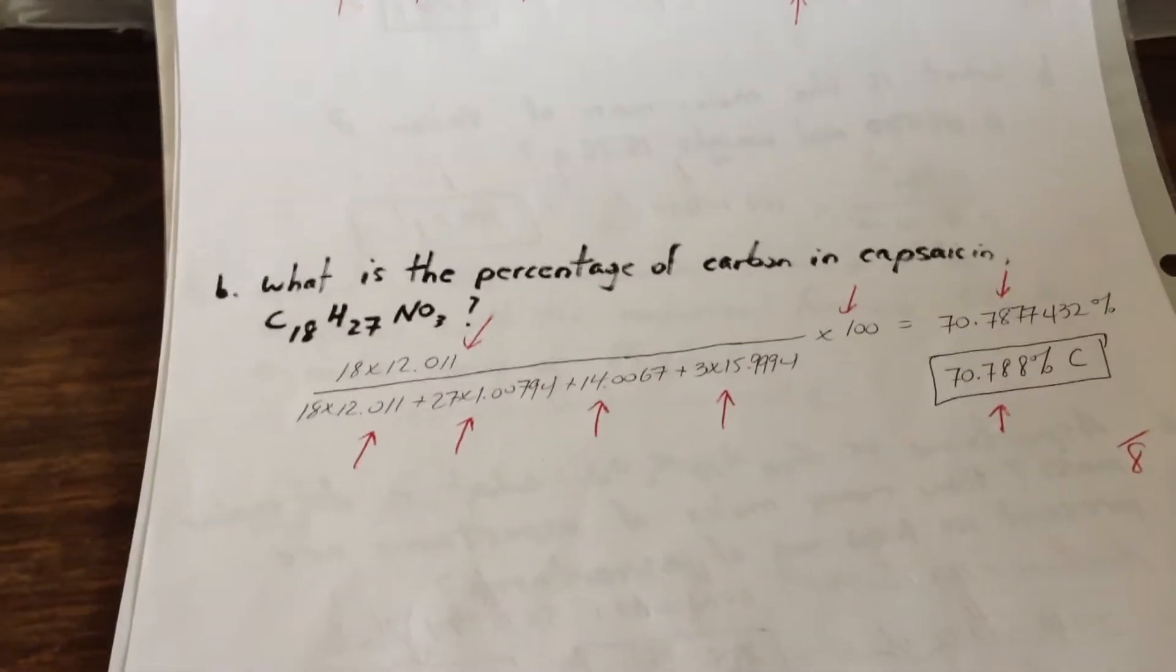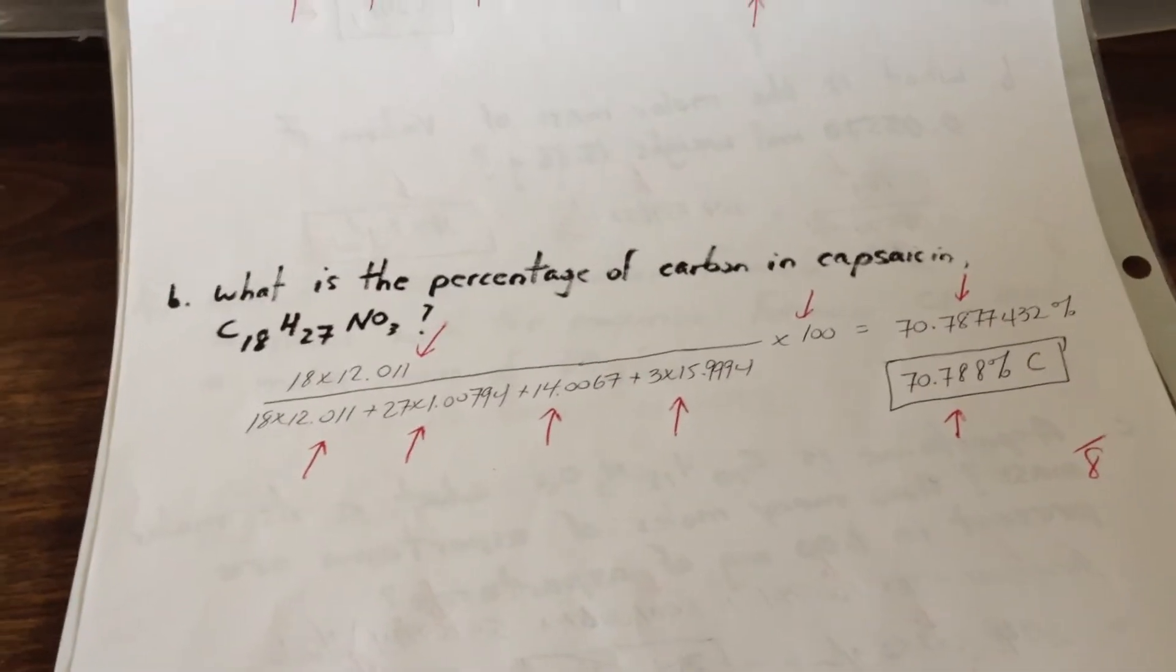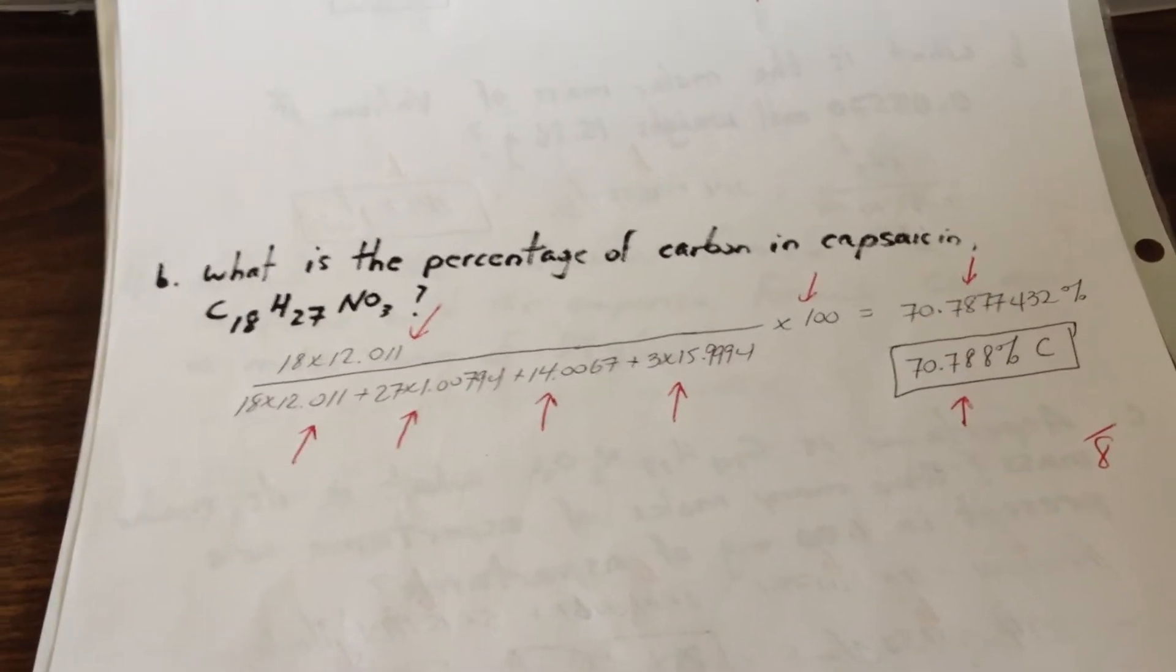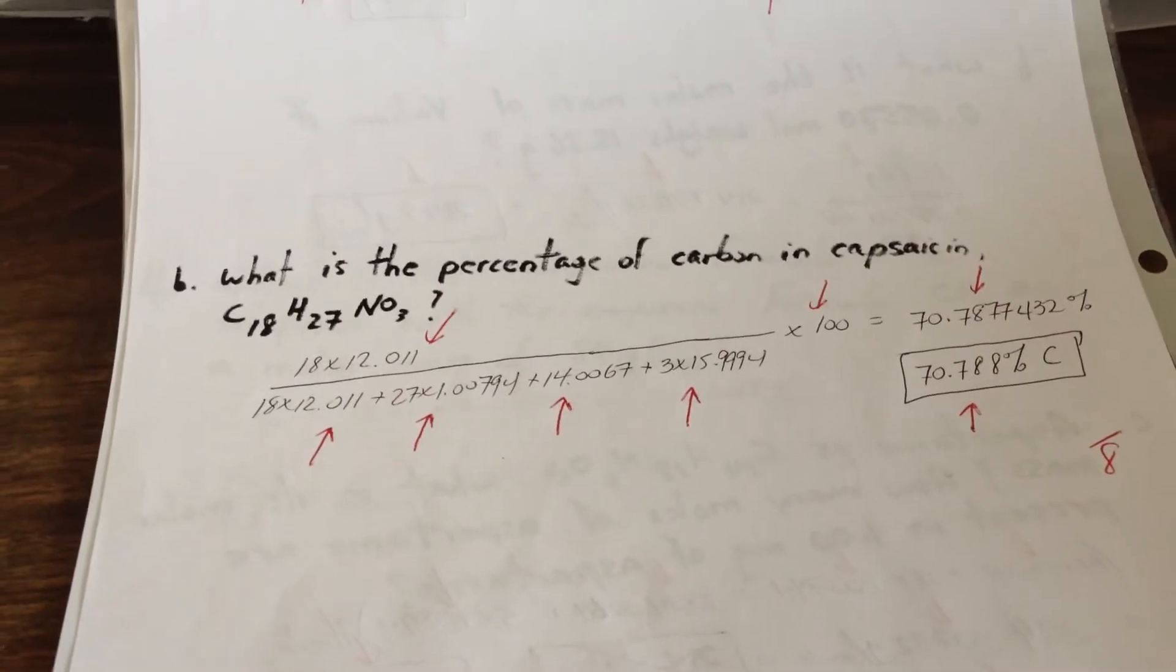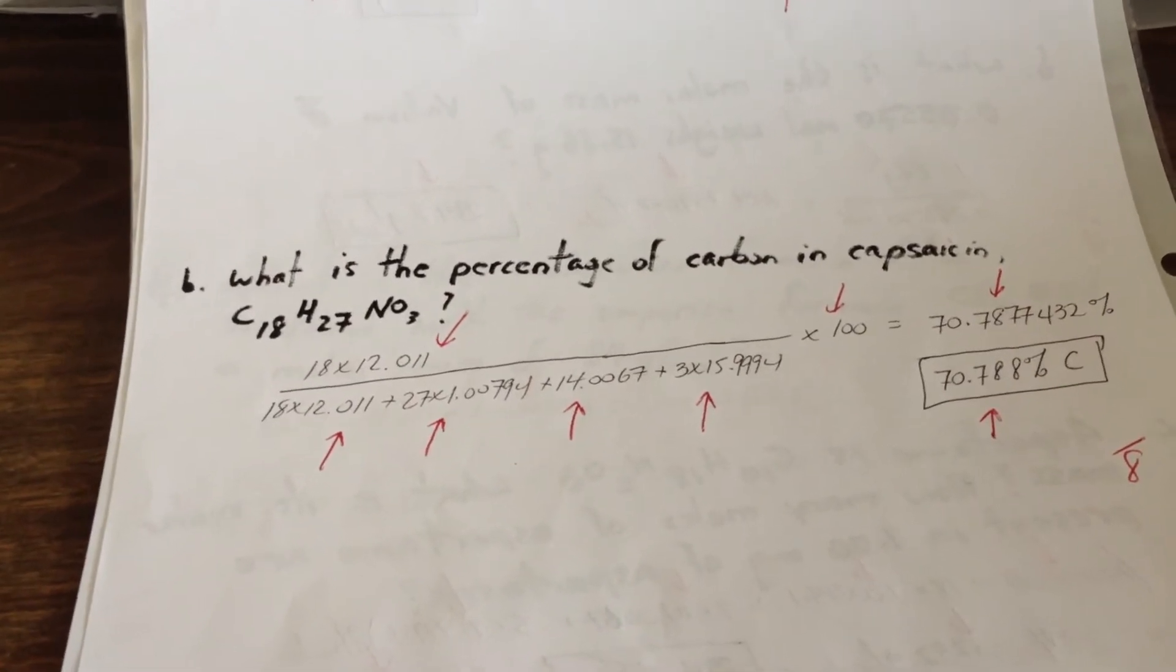The second question is, what is the percentage of carbon in capsaicin? With the formula C18, H27, NO3.